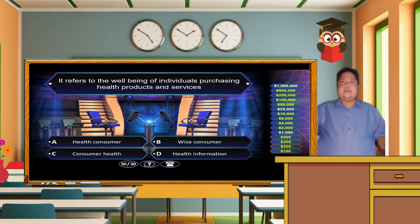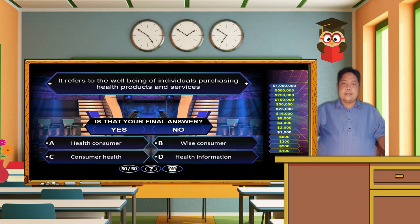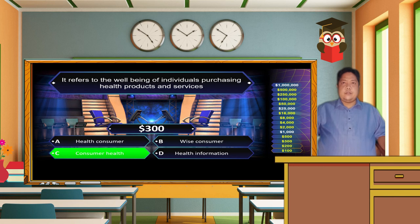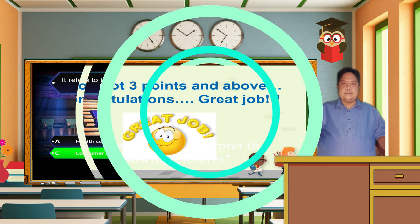It refers to the well-being of individuals purchasing health products and services — Letter A. Health Consumer, Letter B. Wise Consumer, Letter C. Consumer Health, Letter D. Health Information. The correct answer is letter C. Consumer health refers to the well-being of individuals purchasing health products and services.